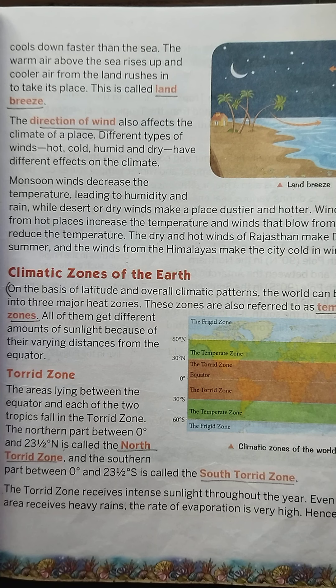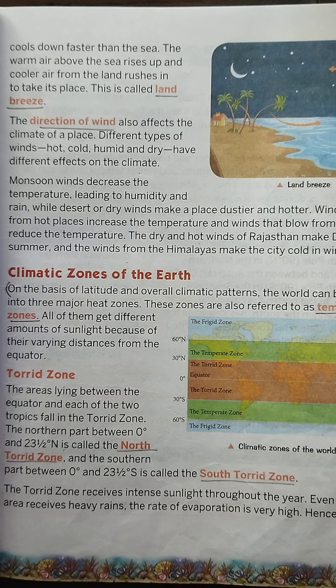The equator is the area of the earth where the climate is the hottest because the sun rays fall vertically on the equator. As we move towards the poles from the equator, the climate becomes less hot because these areas get the slanting rays of the sun. Slanting sun rays cover a large area, so the areas near the poles are far less hot than the areas near the equator.